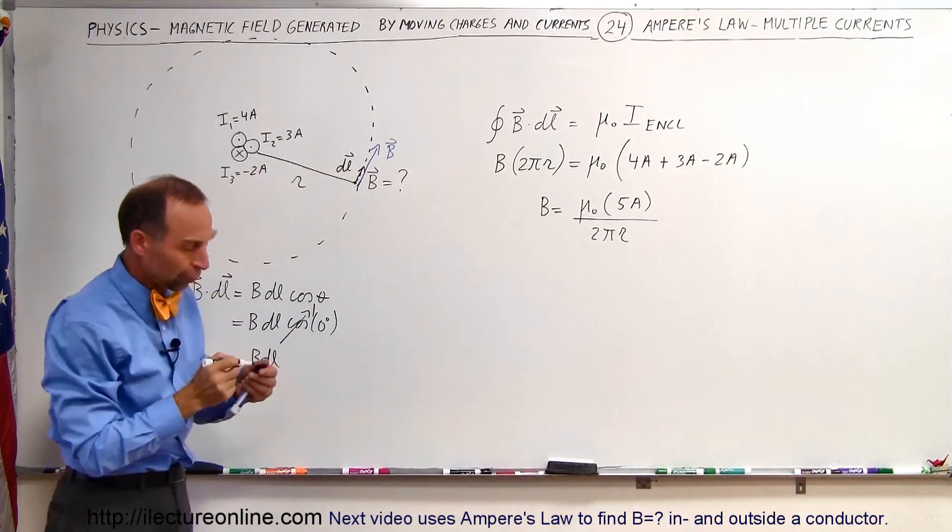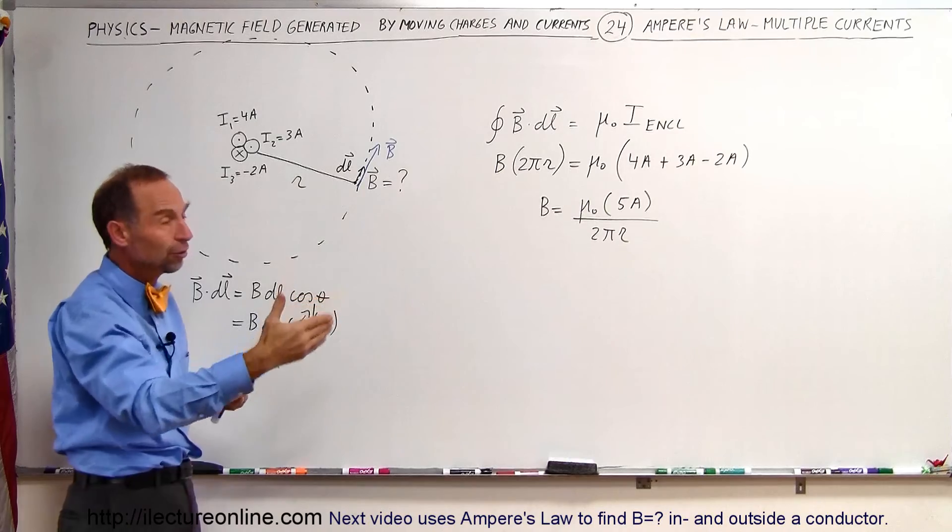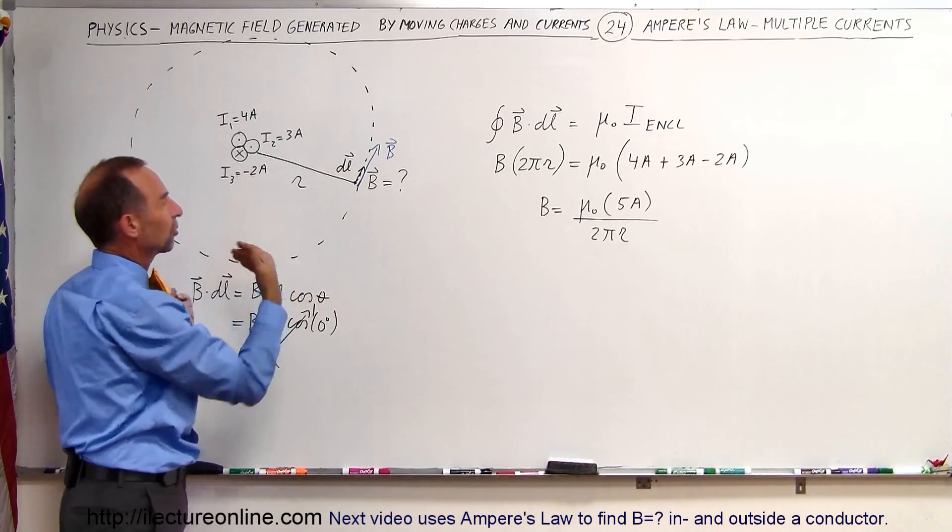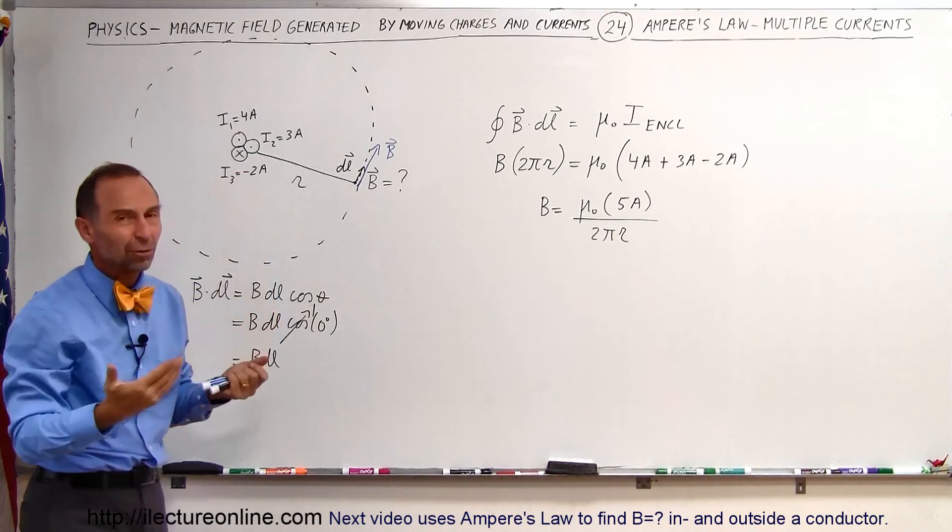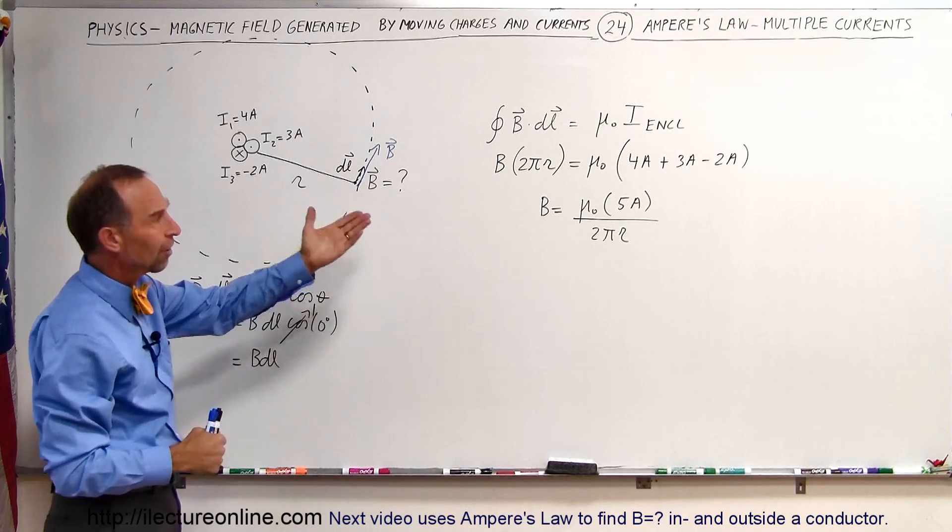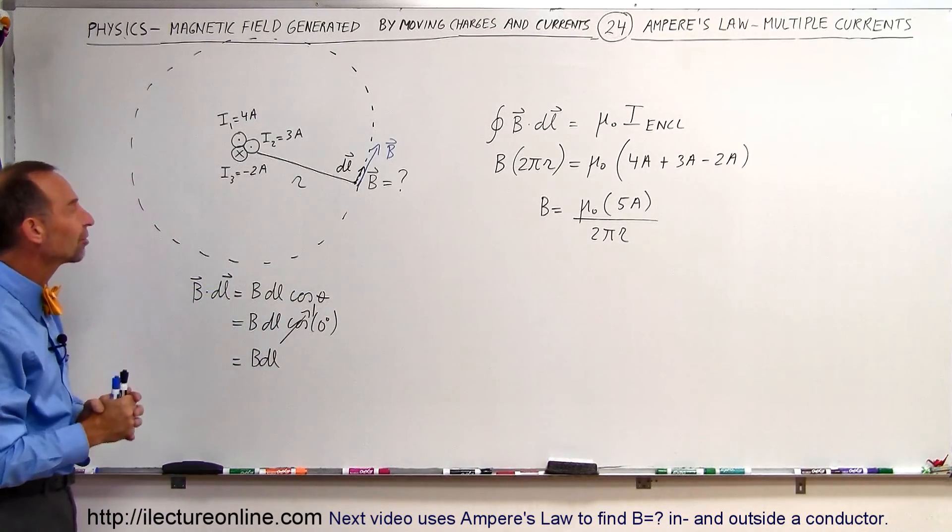Now just put some numbers in for the current, so you can see that that's all you simply do. You simply add up all the currents. If there's multiple currents, if they're in the same direction coming out of the board, consider that positive. Going into the board, consider negative. It doesn't really matter which way you do it, as long as you realize which is which. And so that's how you find the magnetic field around a bundle of wires, each carrying their separate current.